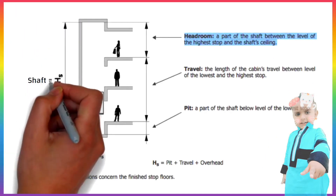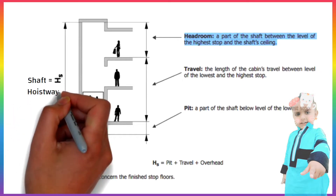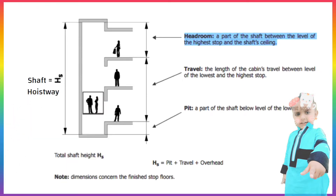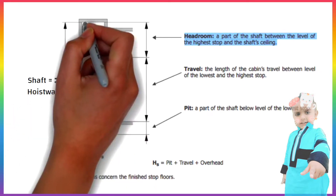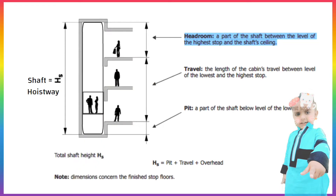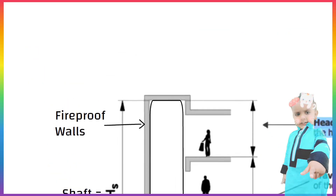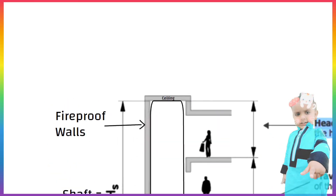Shaft, also known as hoistway, is the space in which one or more elevator cars move. This space is enclosed by fireproof walls, pit and ceiling for the travel of one or more elevators.